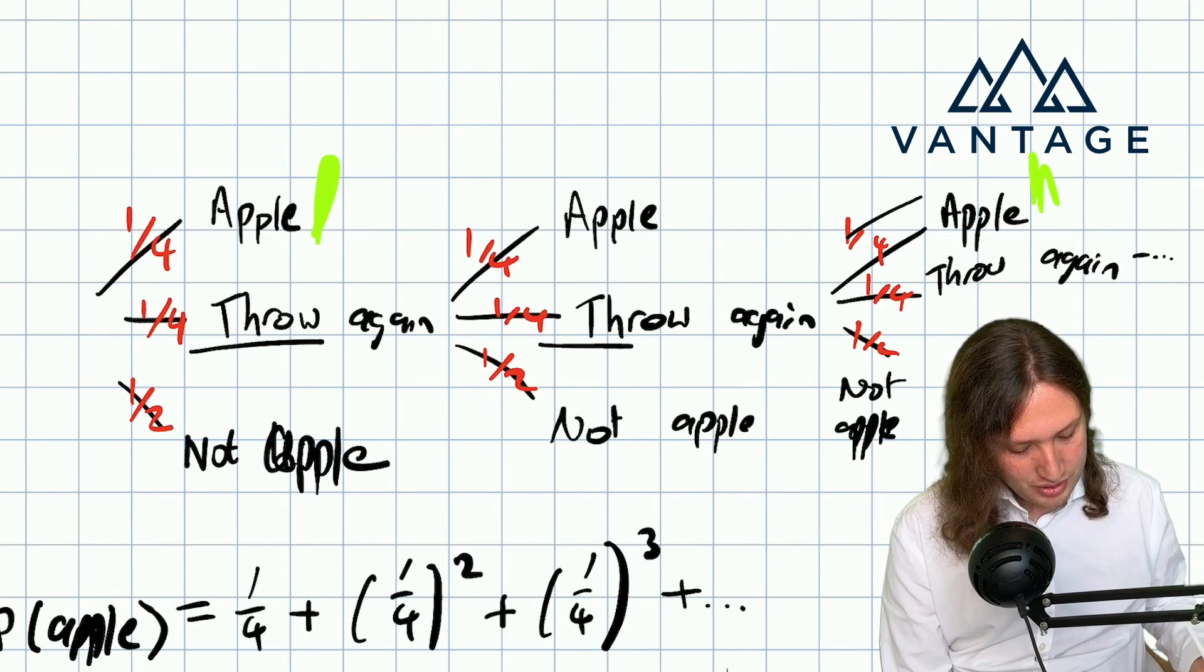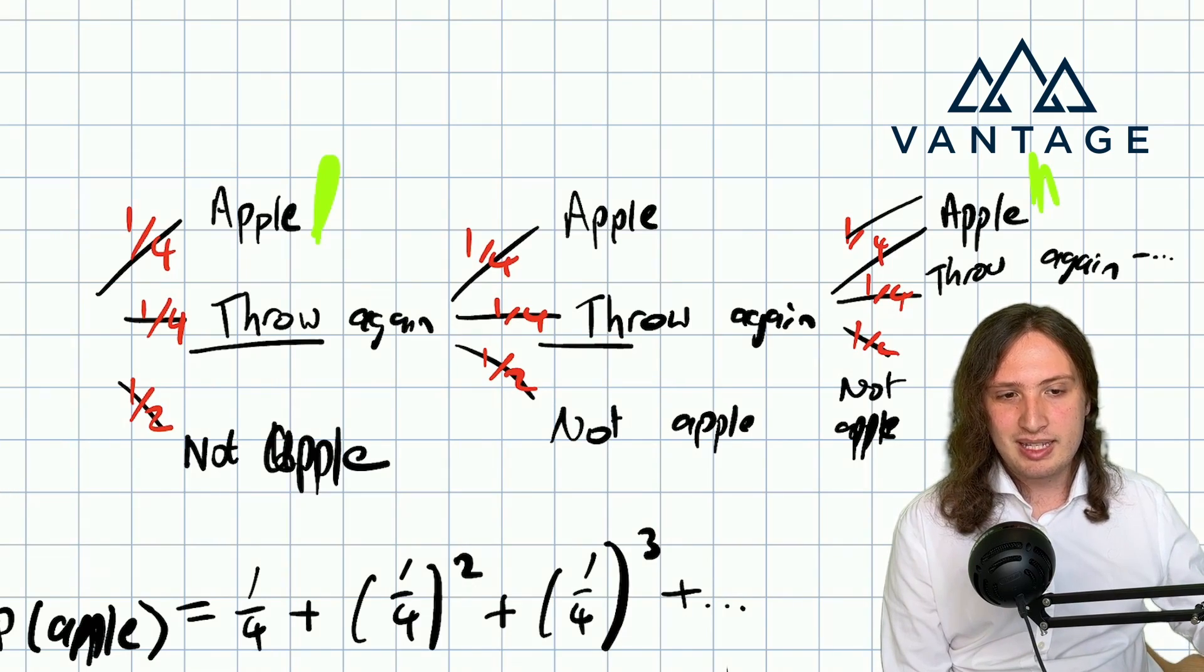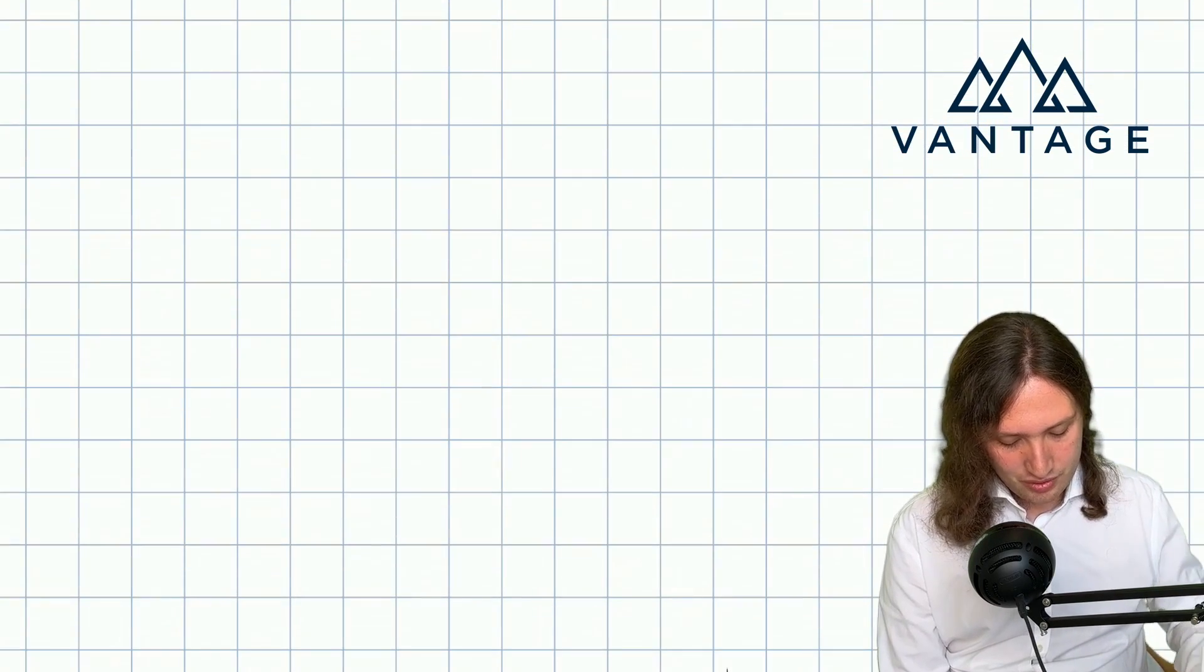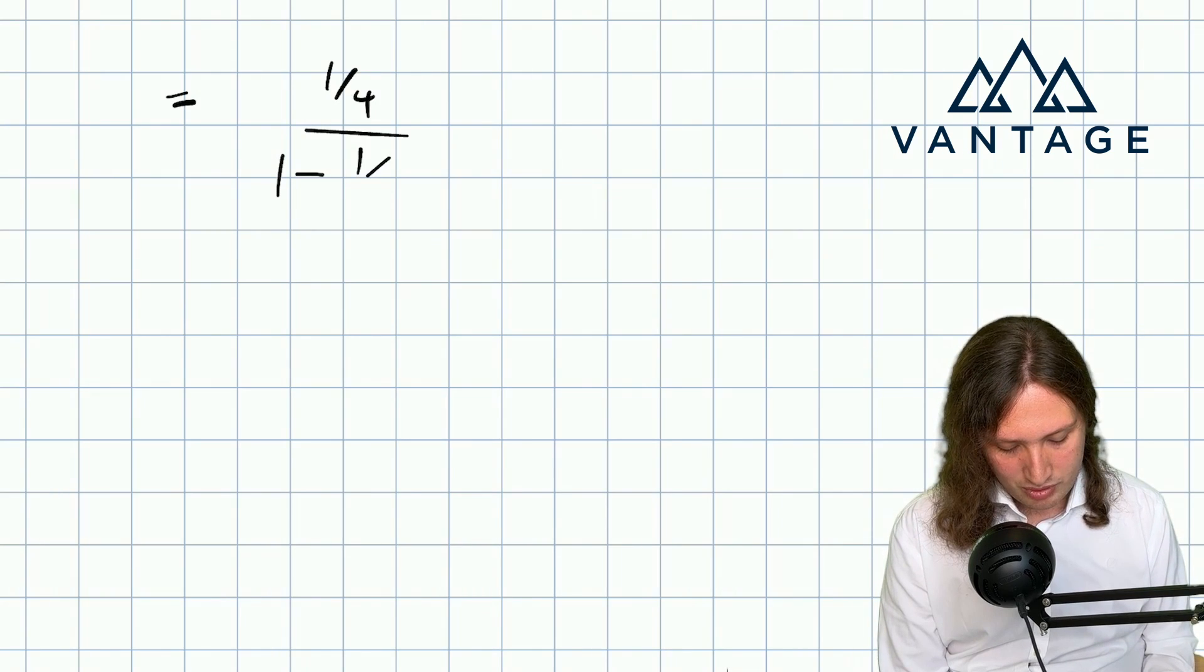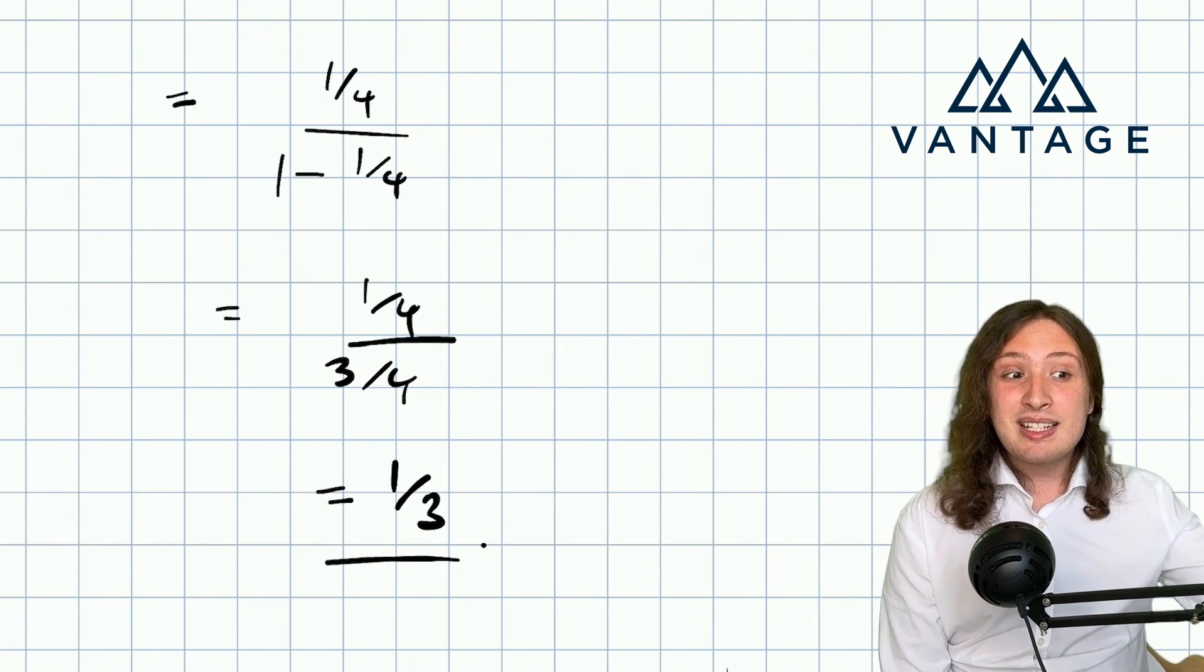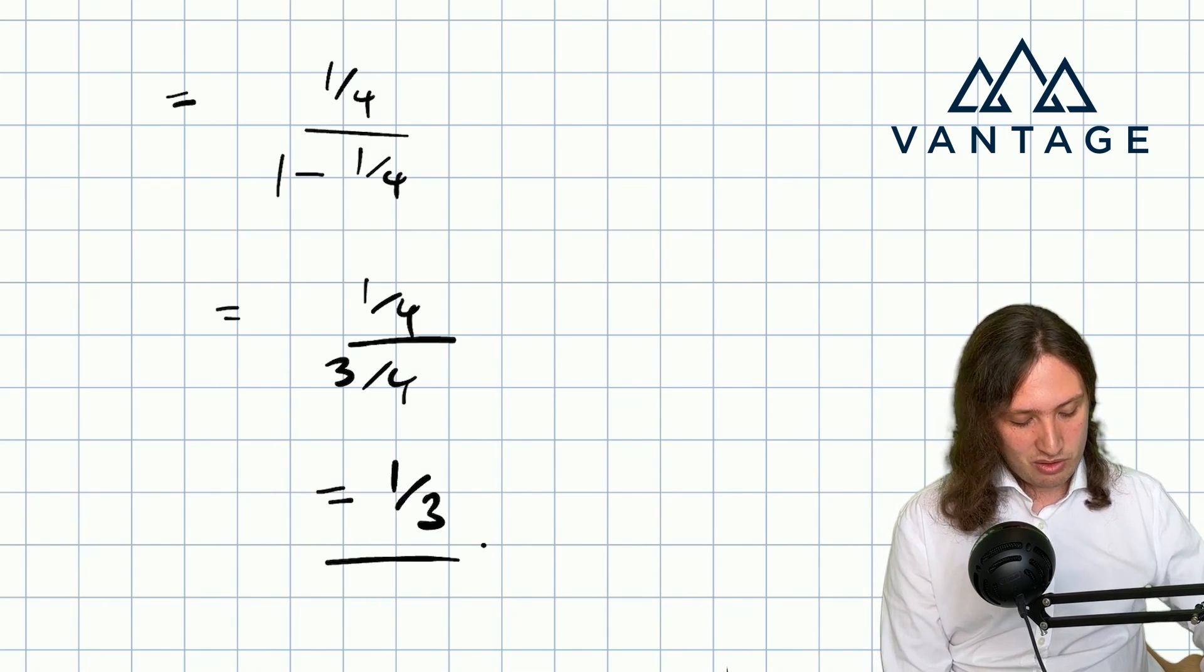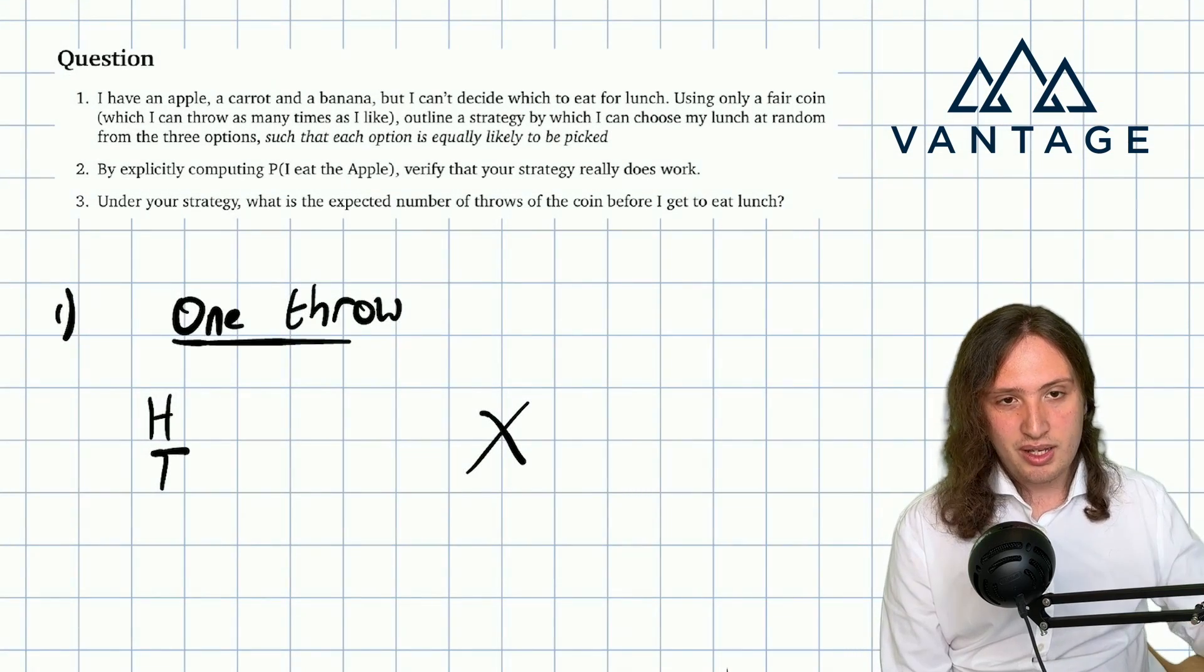Now, fortunately for us, this has indeed arranged itself into really the only type of infinite series, which is straightforward to evaluate. And that is an infinite geometric series. So we get first term over one minus the common ratio, which is a quarter over three quarters, which is a third. And that's exactly what we wanted. We wanted all three outcomes to be equally likely. So it's good that we've got this outcome. This shows our strategy is working.